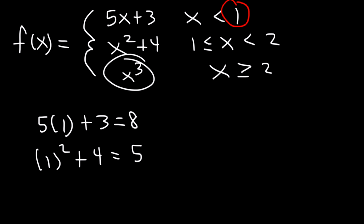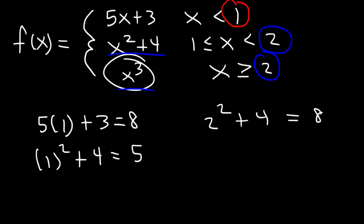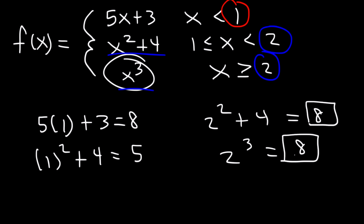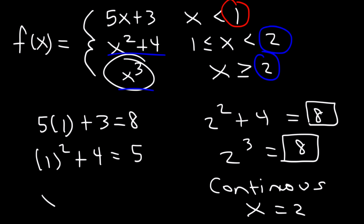Now what about at x equals 2? We need to use the second and third pieces. Plugging 2 into x squared plus 4 gives 2 squared plus 4, which is 8. And 2 to the third power is also 8. Because these two pieces have the same y value, the function is continuous at x equals 2. So the only point of discontinuity is at x equals 1.